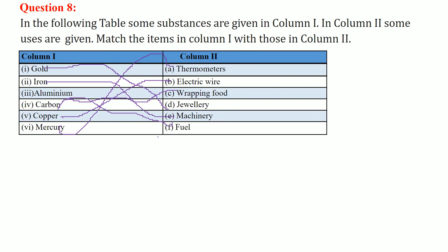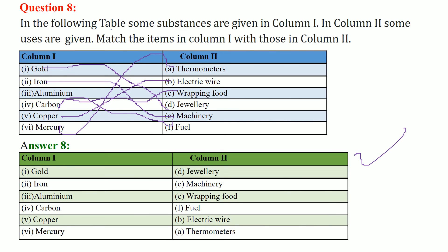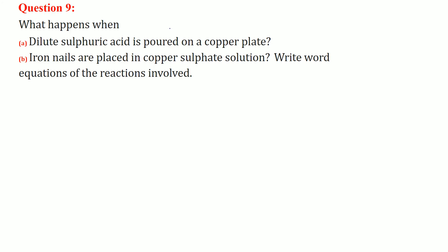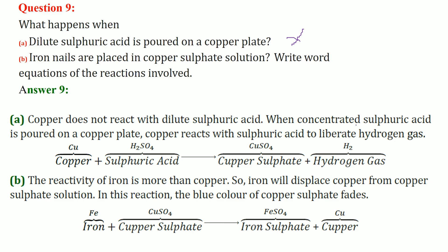What happens when dilute sulfuric acid is poured on a copper plate? Nothing. But if we pour concentrated sulfuric acid on a copper plate, copper will react with sulfuric acid.